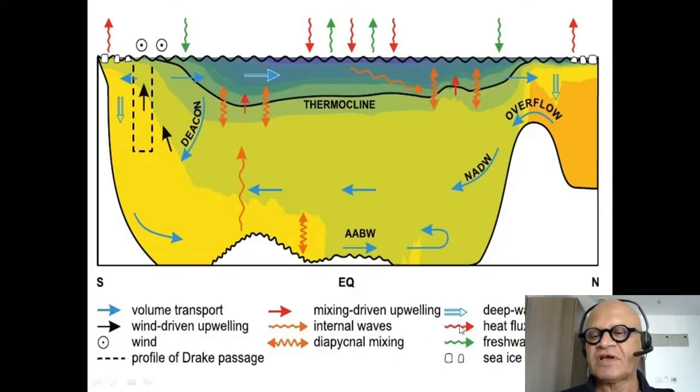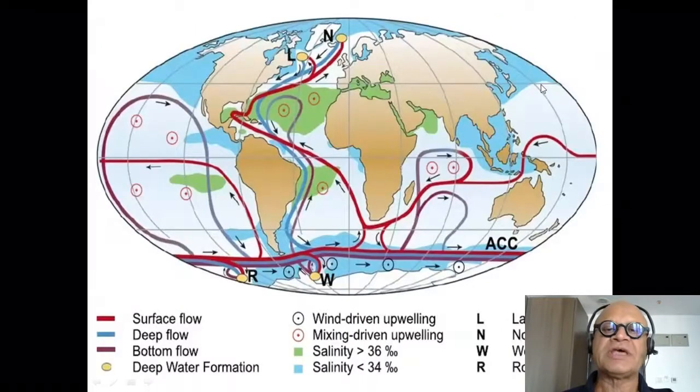There are surface fluxes, fresh water and heat fluxes, and there is sea ice formation, brine rejection, etc. This is something we will see a couple more times. This is very critical.